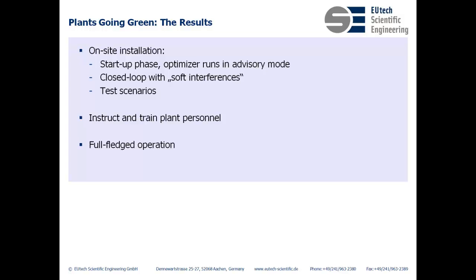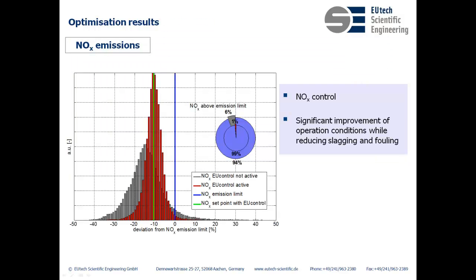Now let's take a look at how the four goals fared: NOx, CO, oxygen, and air-fuel ratio, and the overall efficiency of the power plant. First up is nitrogen oxide emissions. The gray lines represent the distribution of NOx emissions when the optimizer is not active, and the red lines when it is active. The goal was to keep NOx and CO just below their legal limits, while the overall excess oxygen is reduced. The optimizer was able to significantly reduce the variations in NOx values and keep it close and stable to the legal limit. The amount of time NOx levels crossed the legal threshold decreased from 6% to 1% of the time.